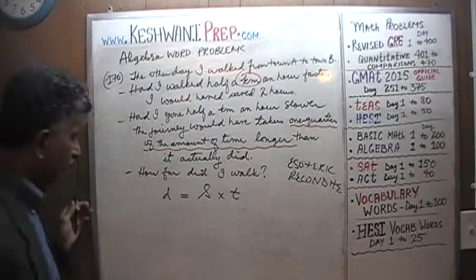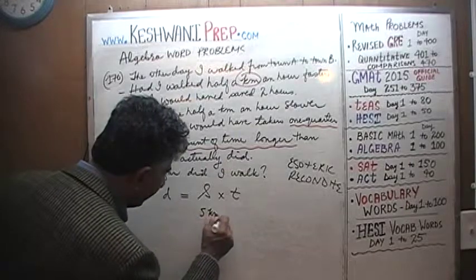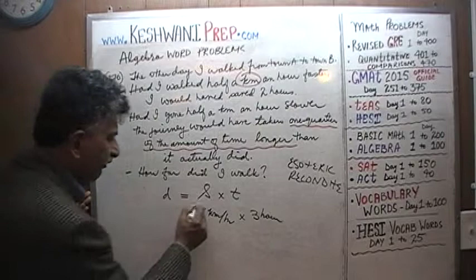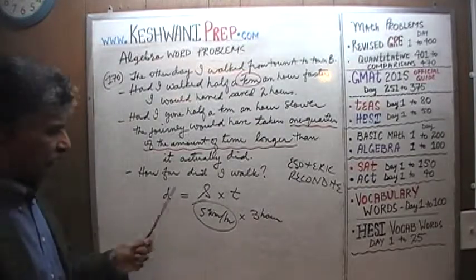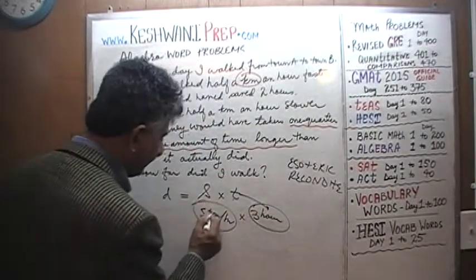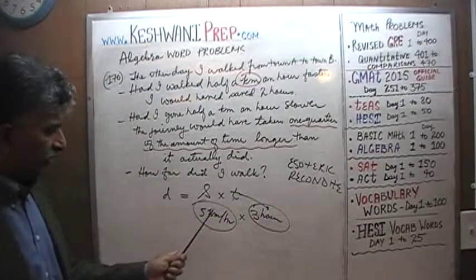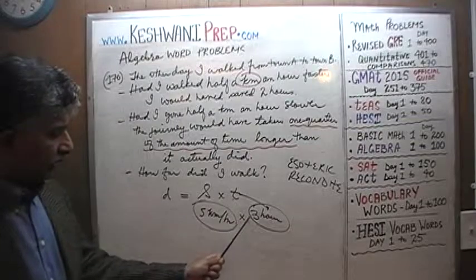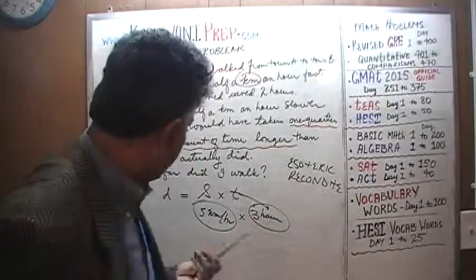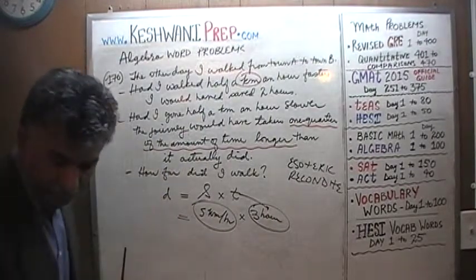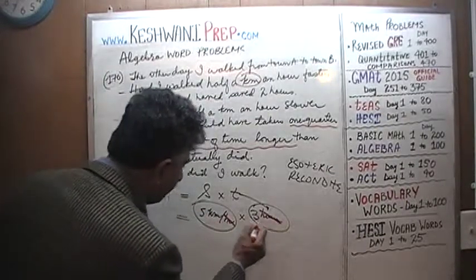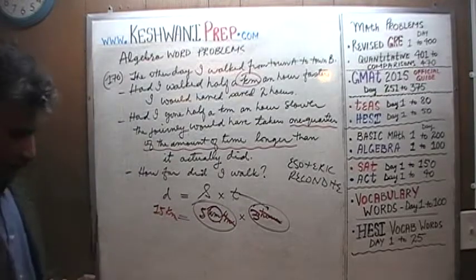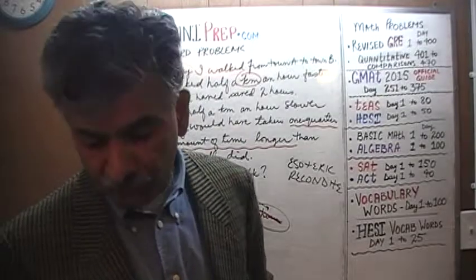For example, if s represents the speed — say I'm going at 5 kilometers per hour — and t represents the time in hours, they must be consistent units. If I tell you I was going 5 kilometers per hour and I traveled for 3 hours, then I went 15 kilometers. The hours cancel out and we're left with kilometers: 5 times 3 equals 15. That's the basic concept we'll use here. So: d represents distance in kilometers, s represents speed in kilometers per hour, and t represents time in hours.